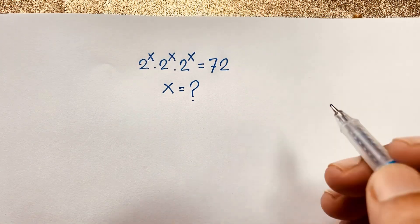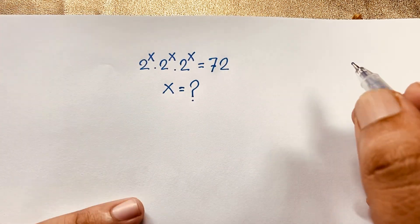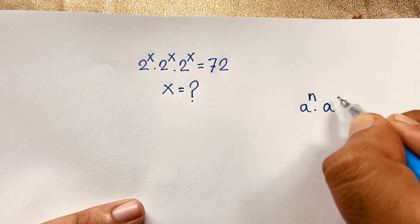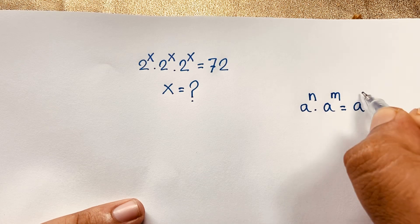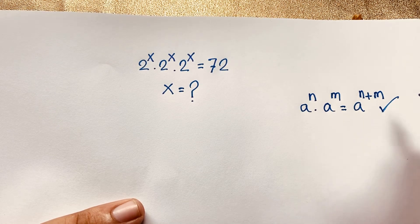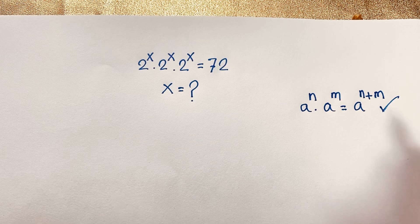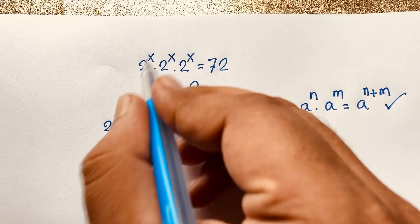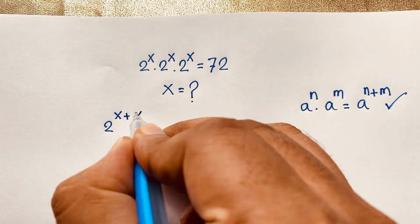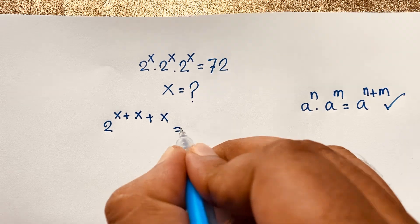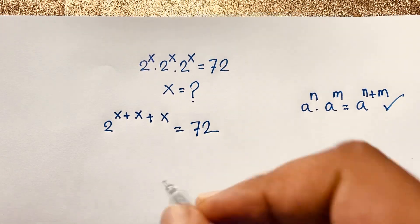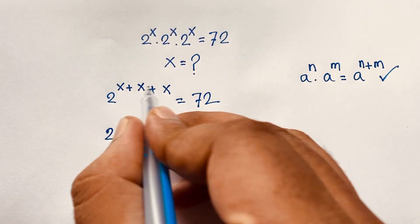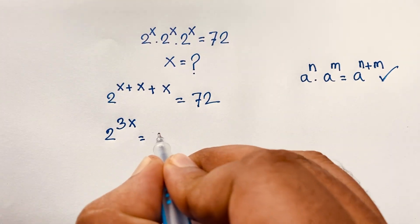First of all, recall the exponential formula: e to the power n times e to the power m equals e to the power n plus m. According to this formula, this expression becomes 2 to the power x plus x plus x, which equals 72. So 2 to the power 3x is equal to 72.